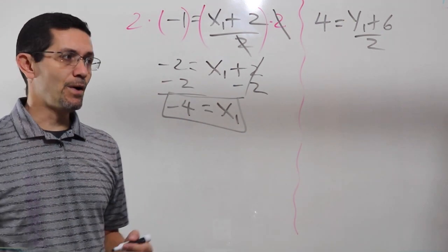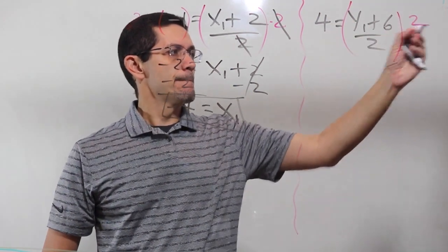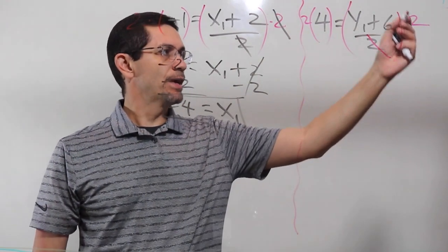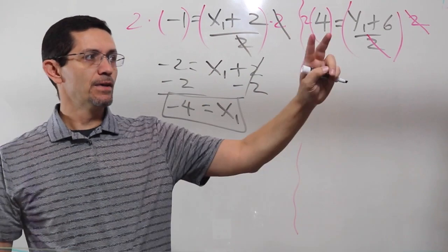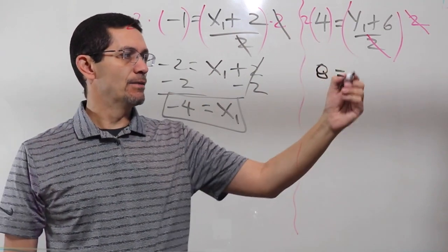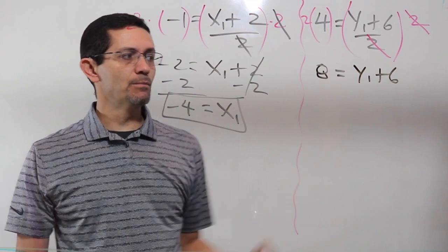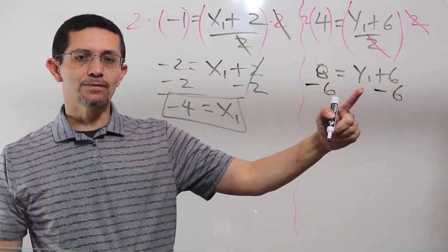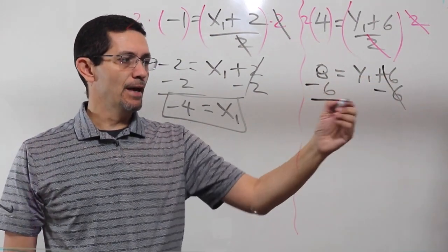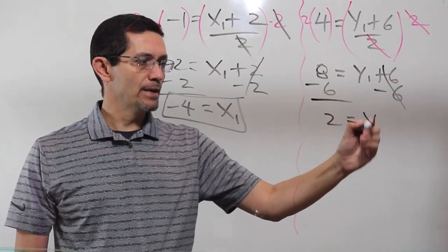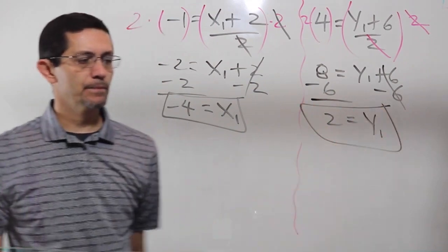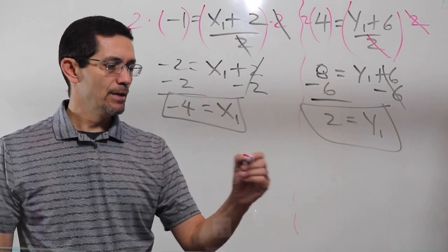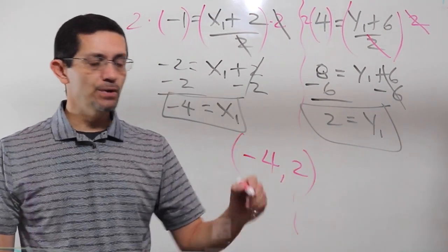Same thing with the y. Multiply by both sides. This 2 cancels this 2, and here I'll have 2 times 4, which is 8. And on the right side, I have y1 plus 6, minus 6, minus 6, because I need to leave the y by itself. So, it cancels here, and 8 minus 6 is going to give me 2, and that's equal to y1. So, the other endpoint that I was looking for is going to be negative 4, comma 2, and this will be your answer.